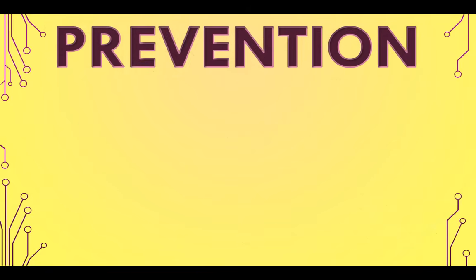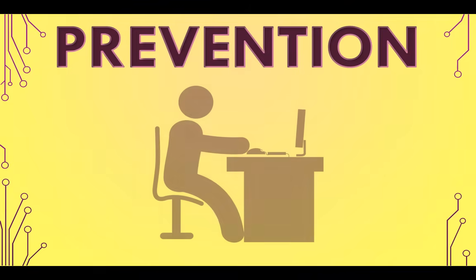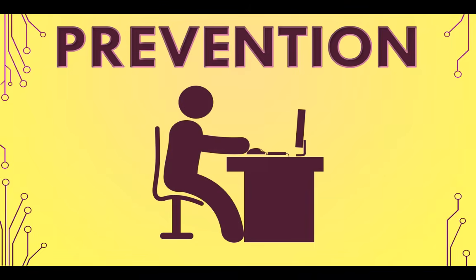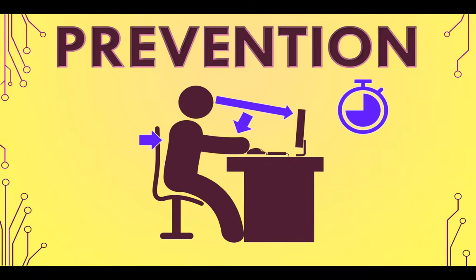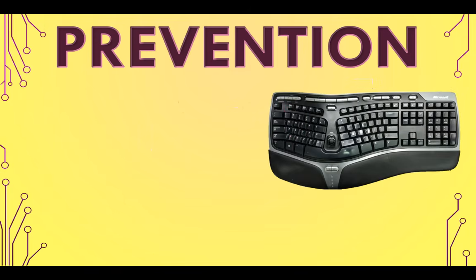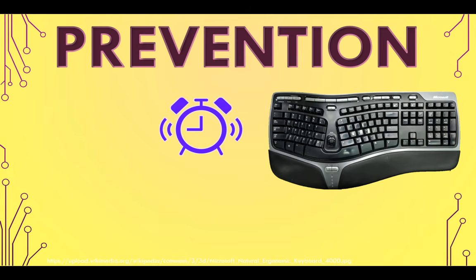The good news is you can prevent these issues. Set up your workspace to be more comfortable — keep your wrists in a natural position, your back supported, and your screen at eye level. Take regular breaks to rest your hands and stretch your wrists and fingers often. Even just a 20-second break every 20 minutes can make a big difference. Using ergonomic keyboards and mice designed to reduce strain are great if you can get hold of them. Maybe try installing apps or setting alarms that remind you to take breaks, or even try voice recognition software to give your hands a rest.